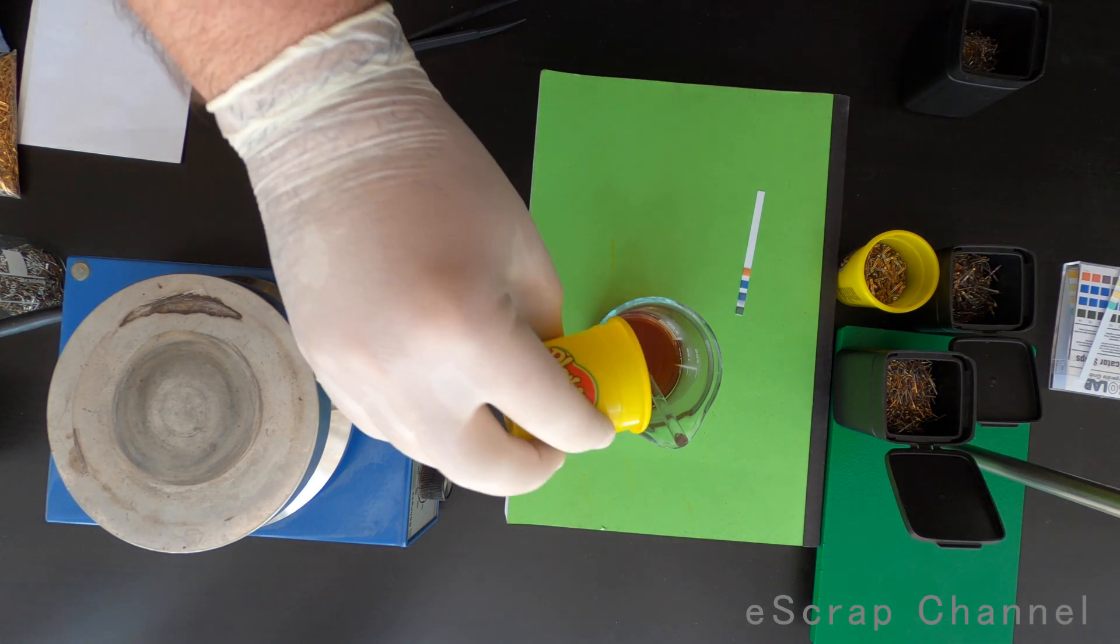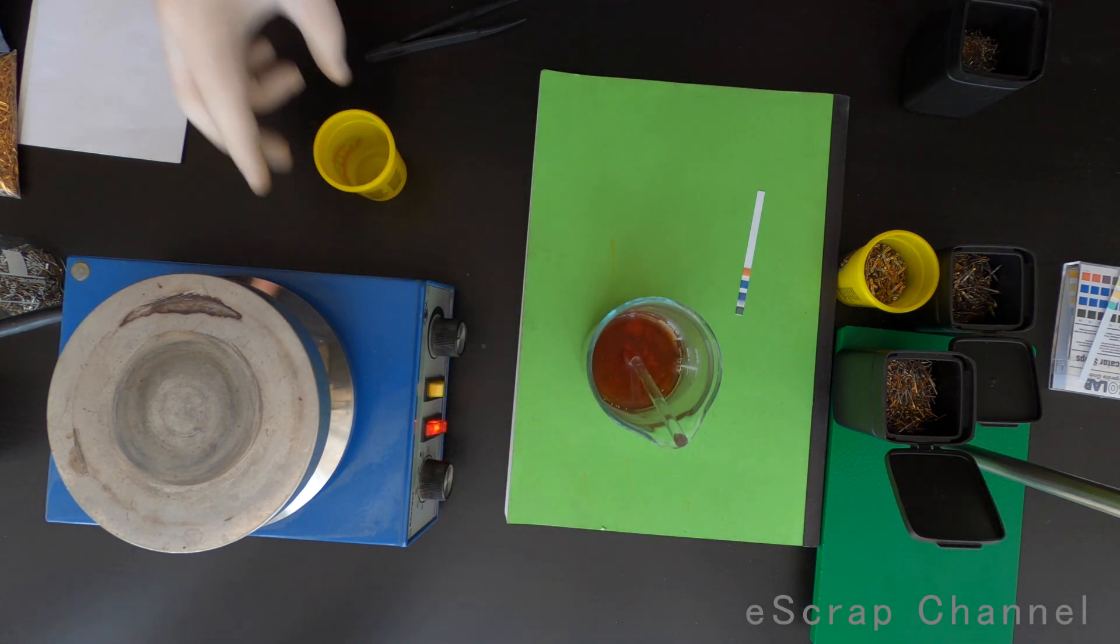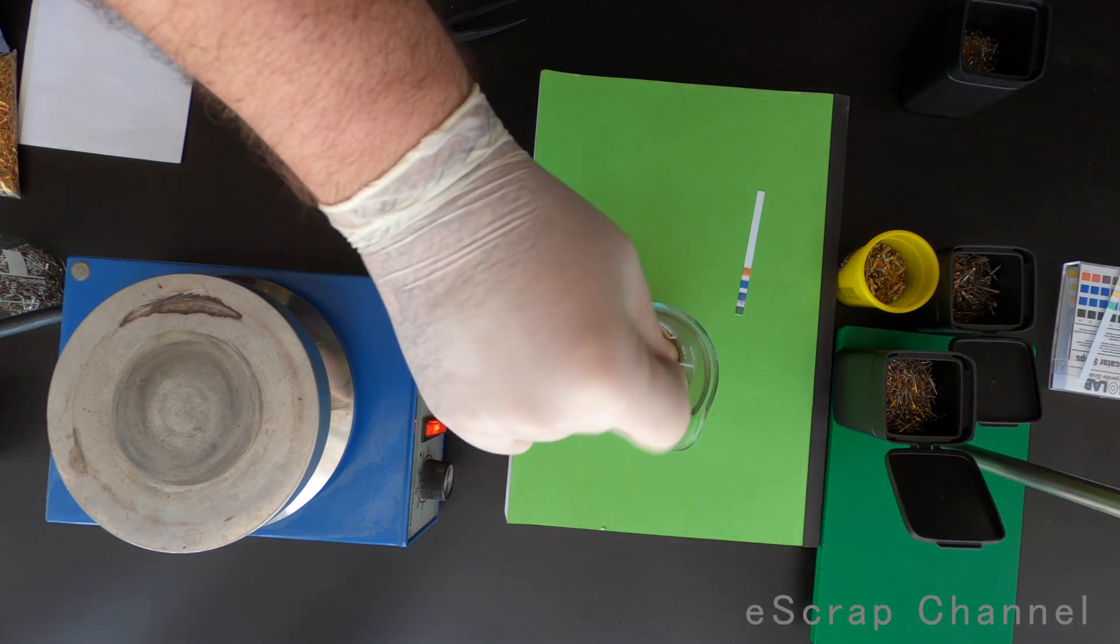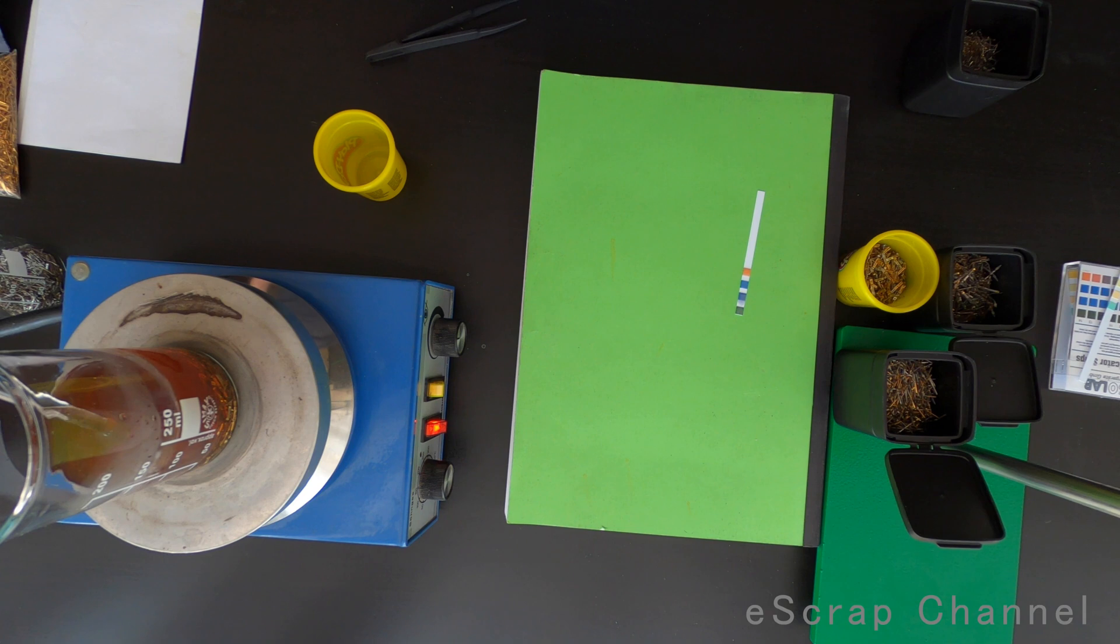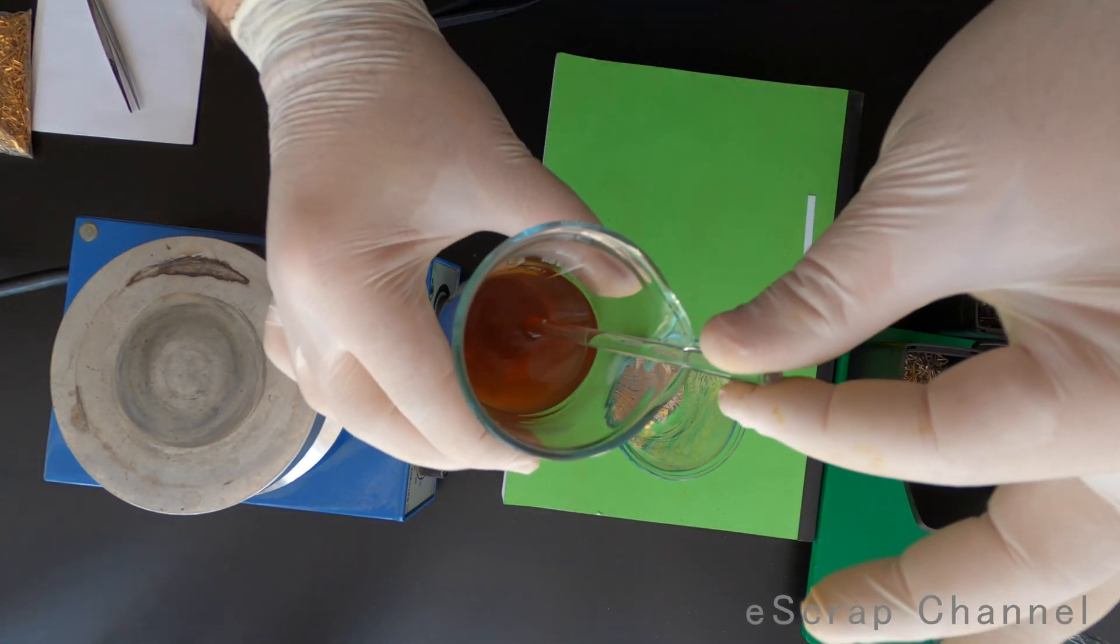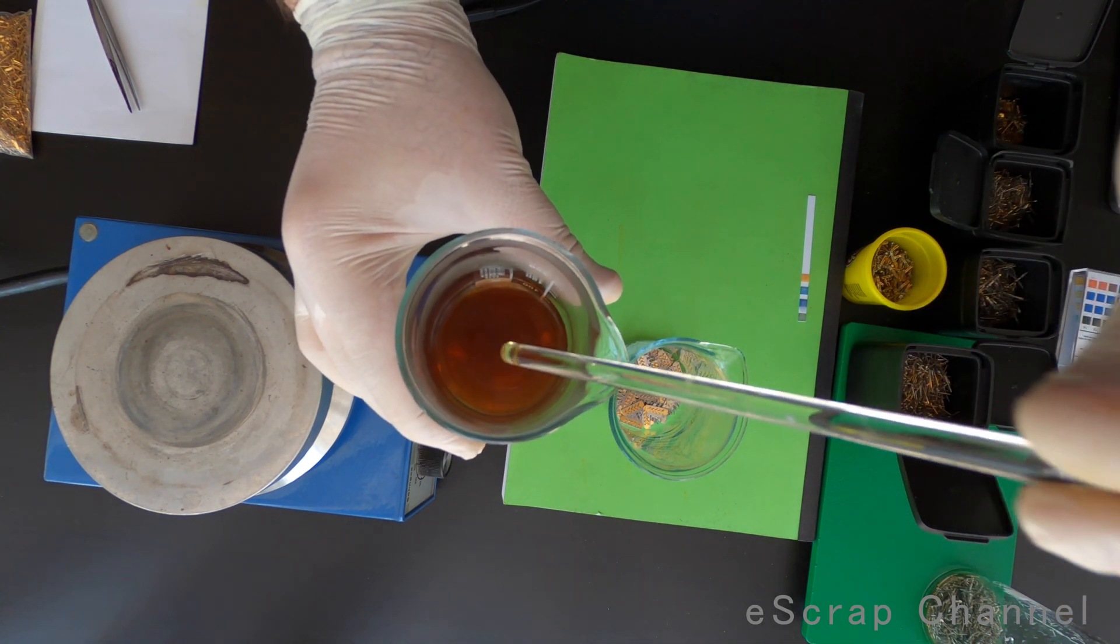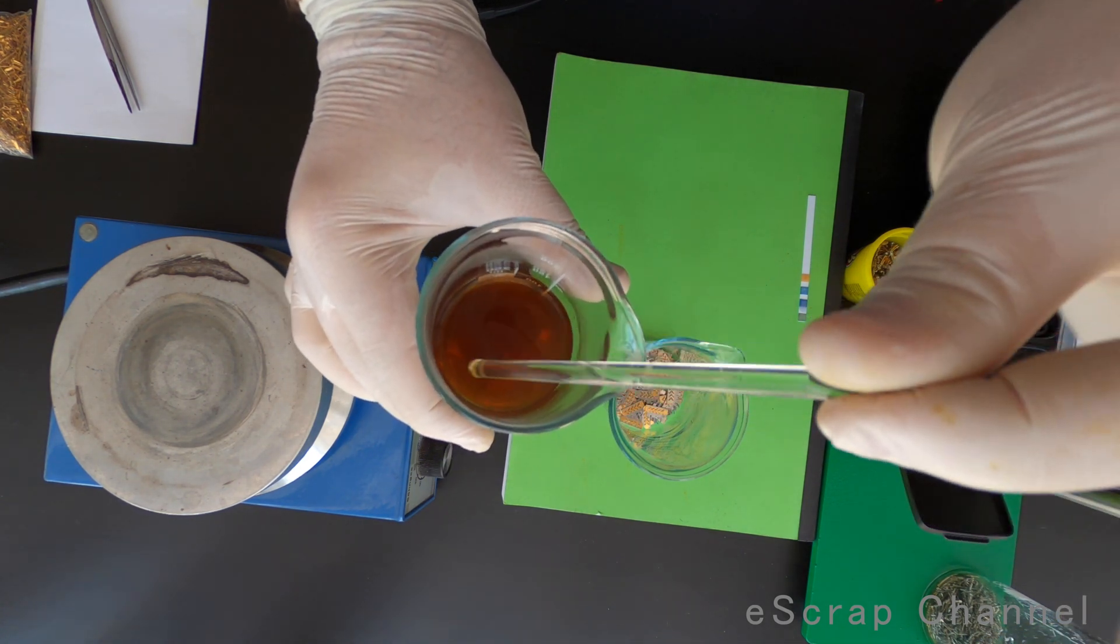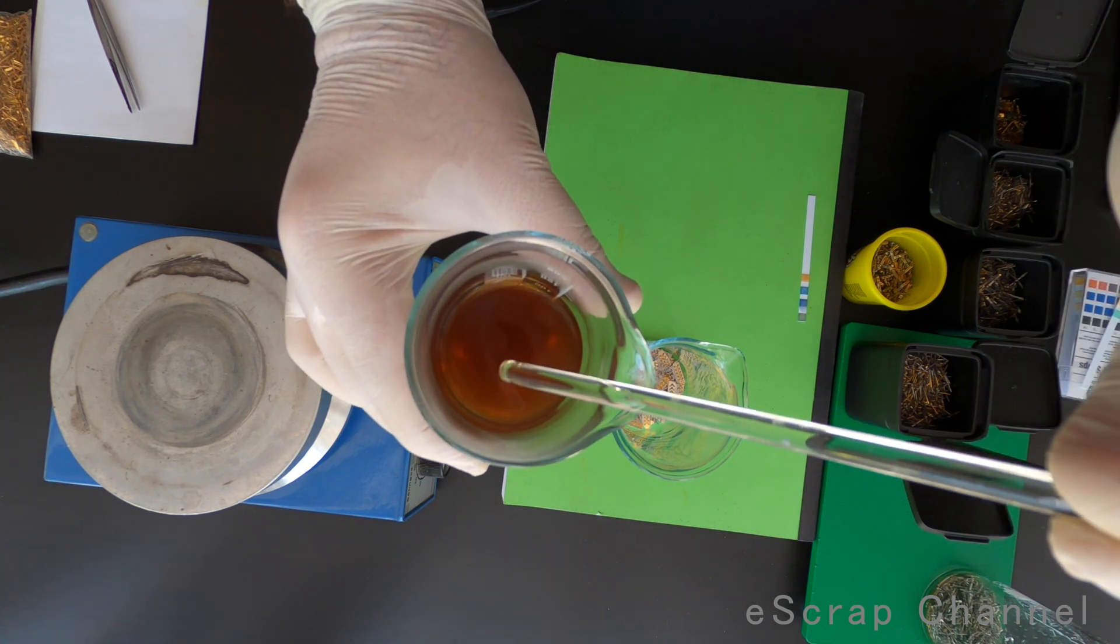Next batch. I will turn it to the hot plate and let's see. Ten minutes later, we have this solution. It's getting more and more dark brown color.